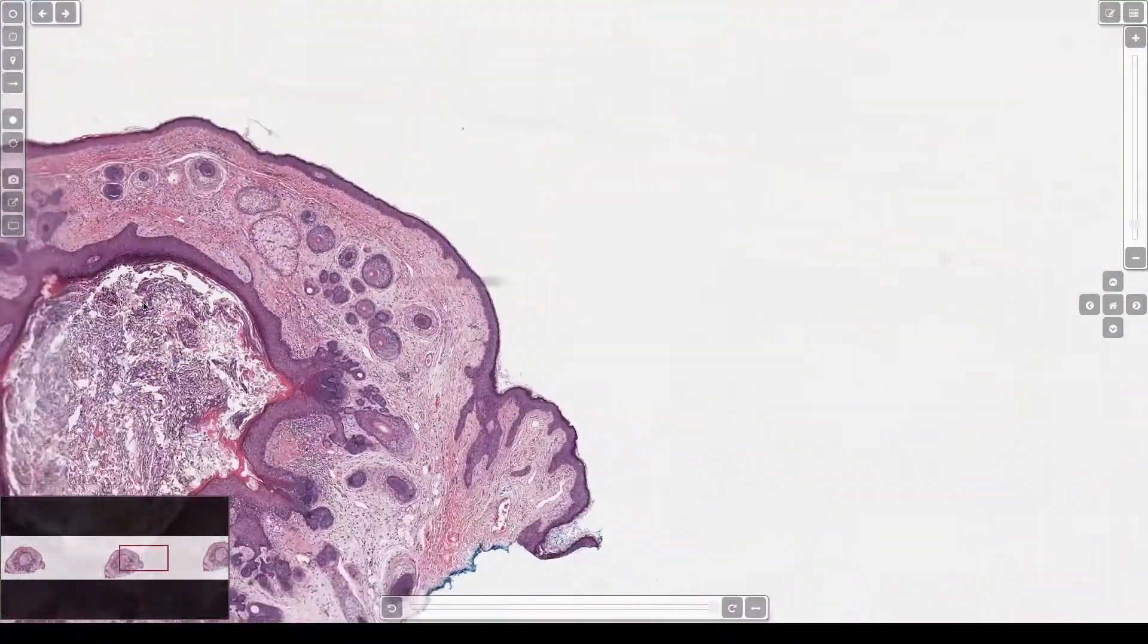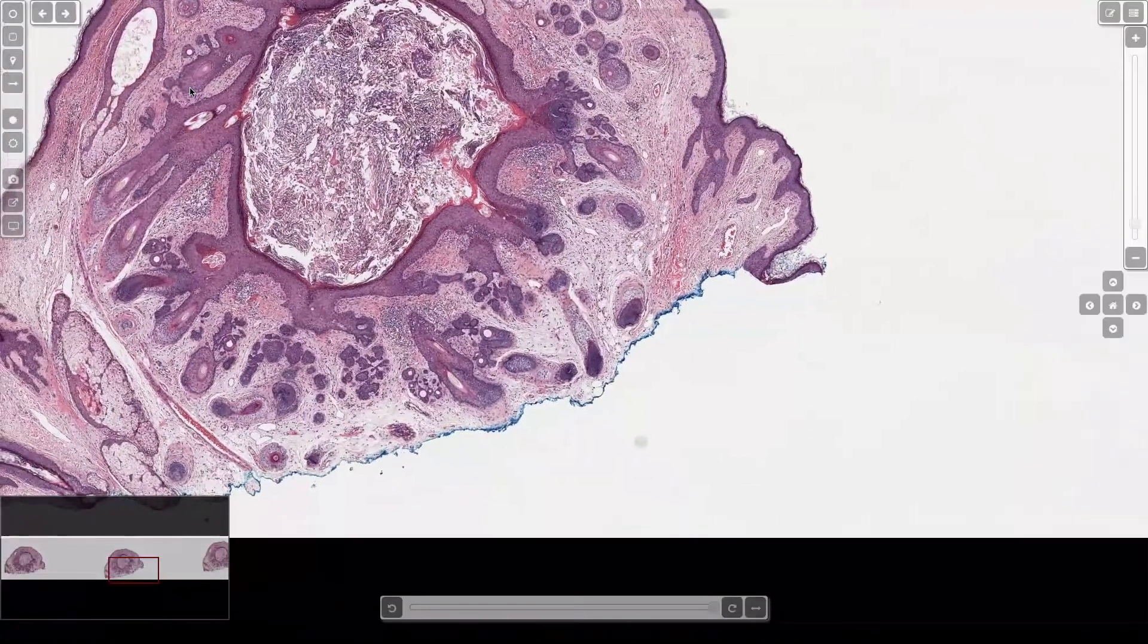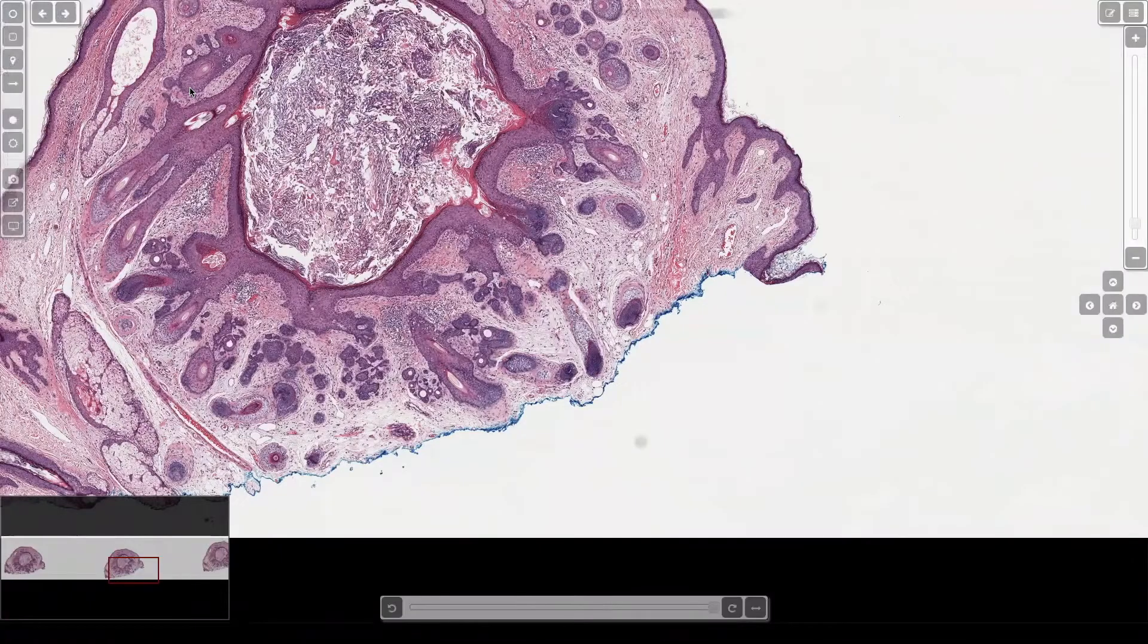And a lot of times if you look from lower power, you can see that the whole lesion tends to be, it's a little harder to appreciate here, but it tends to be wrapped in a fibrous stroma, which is analogous to the adventitia that lines around normal follicles.